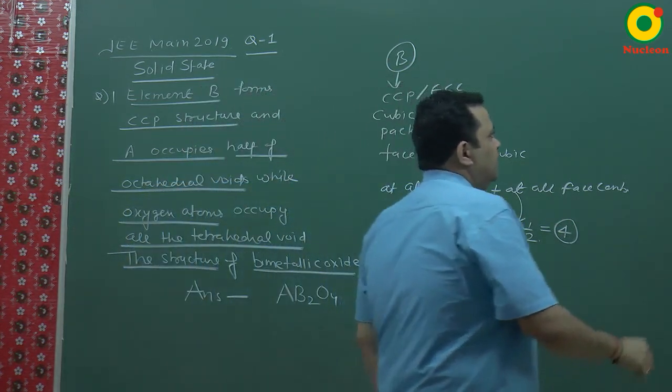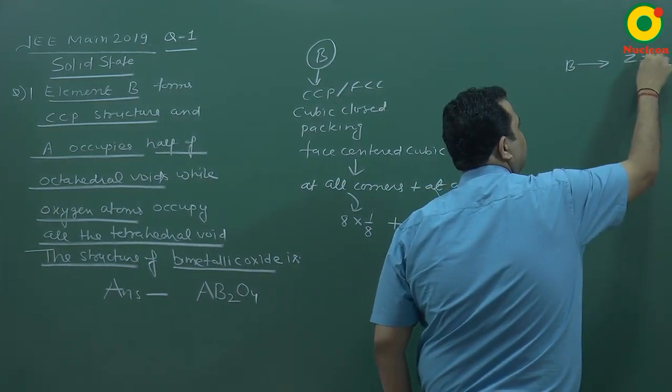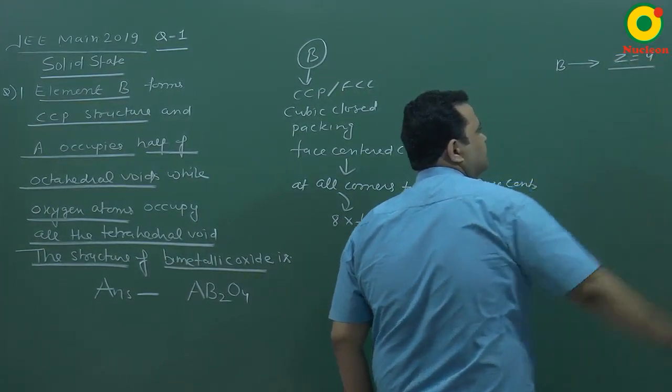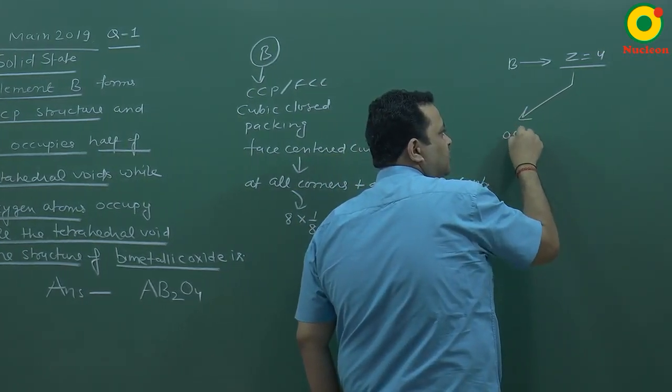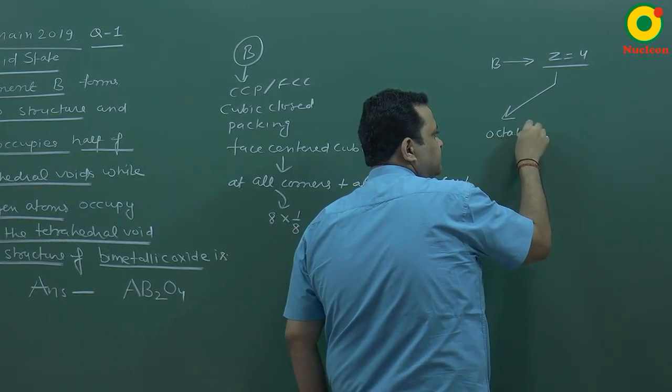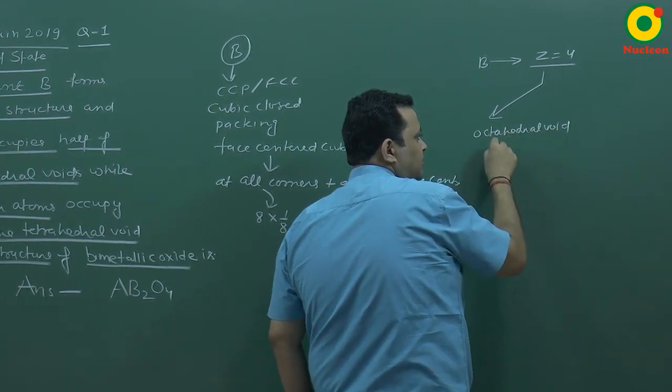Now, if I said that B atom for the effective number of atoms, which is four atoms effectively. Now, we have two types of voids.